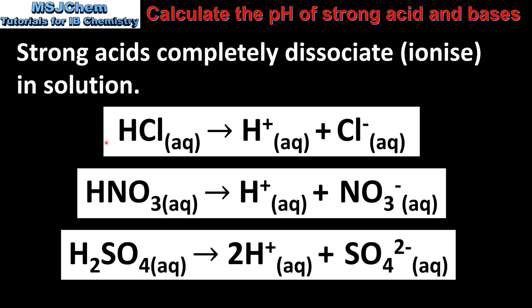The first two acids, hydrochloric acid and nitric acid, are monoprotic acids. A monoprotic acid is able to donate only one proton. So when one mole of each of these acids dissociates, we get one mole of hydrogen ions.